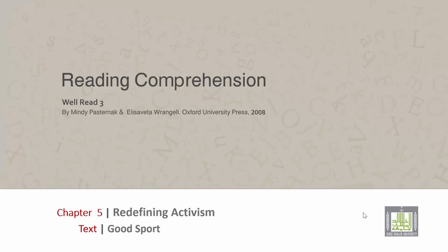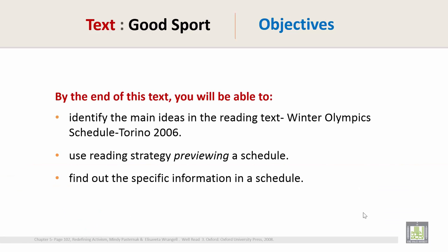Hi everyone, today we are going to start Chapter 5: Redefining Activism. The text objectives: by the end of this text, you will be able to identify the main ideas in the reading text — Winter Olympics Schedule, Torino 2006.